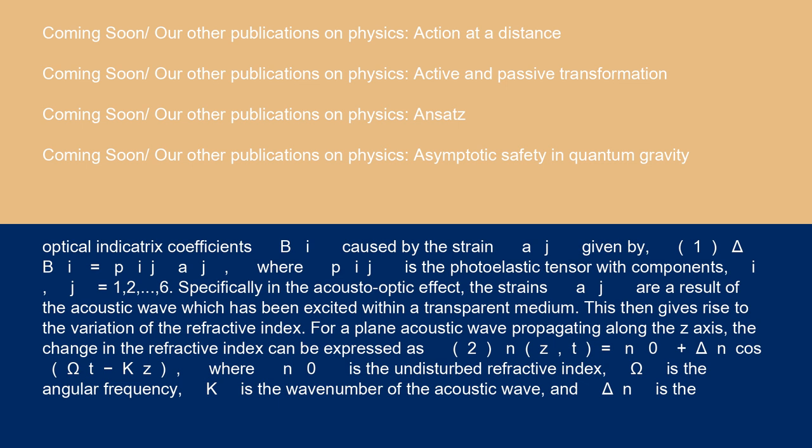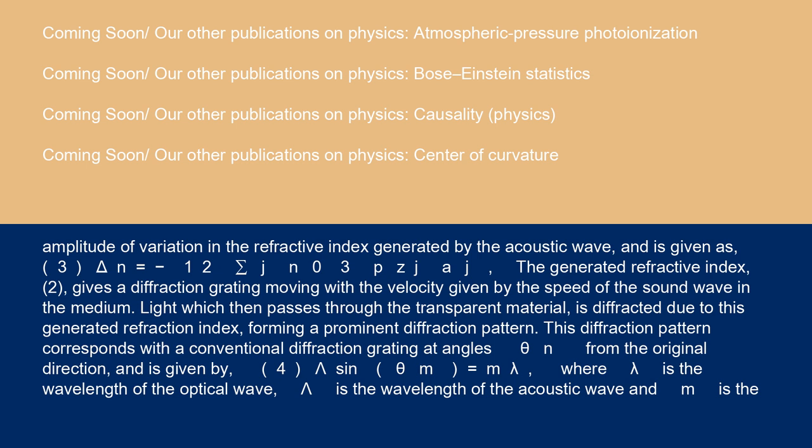Specifically in the acousto-optic effect, the strains AJ are a result of the acoustic wave which has been excited within a transparent medium. This then gives rise to the variation of the refractive index. For a plane acoustic wave propagating along the Z-axis, the change in the refractive index can be expressed as Equation 2: N(Z,T) = N0 + δN cos(ωT - KZ), where N0 is the undisturbed refractive index, ω is the angular frequency, K is the wave number of the acoustic wave, and δN is the amplitude of variation in the refractive index generated by the acoustic wave.